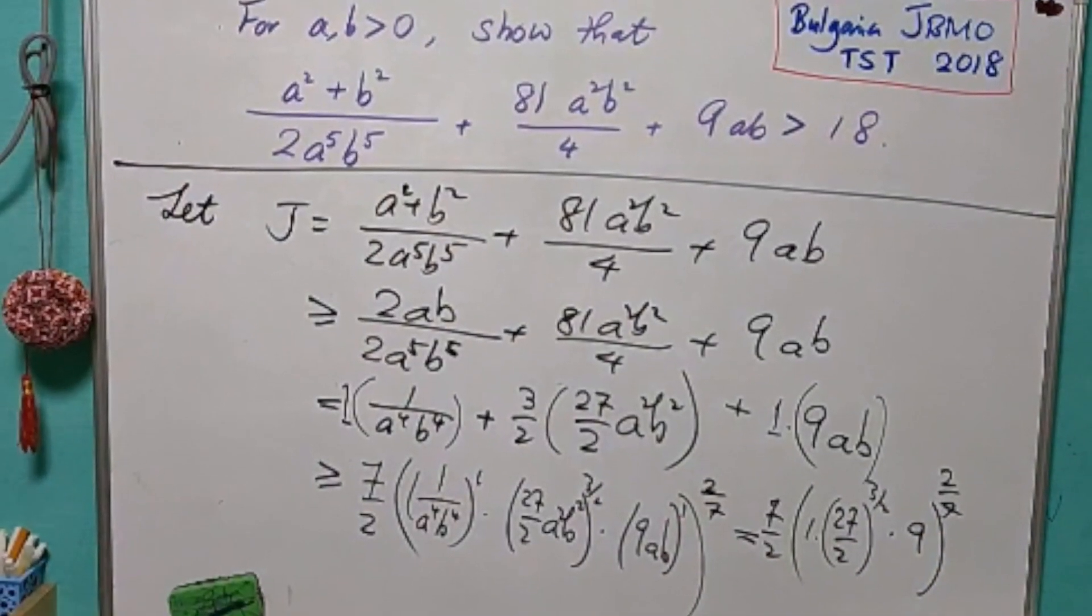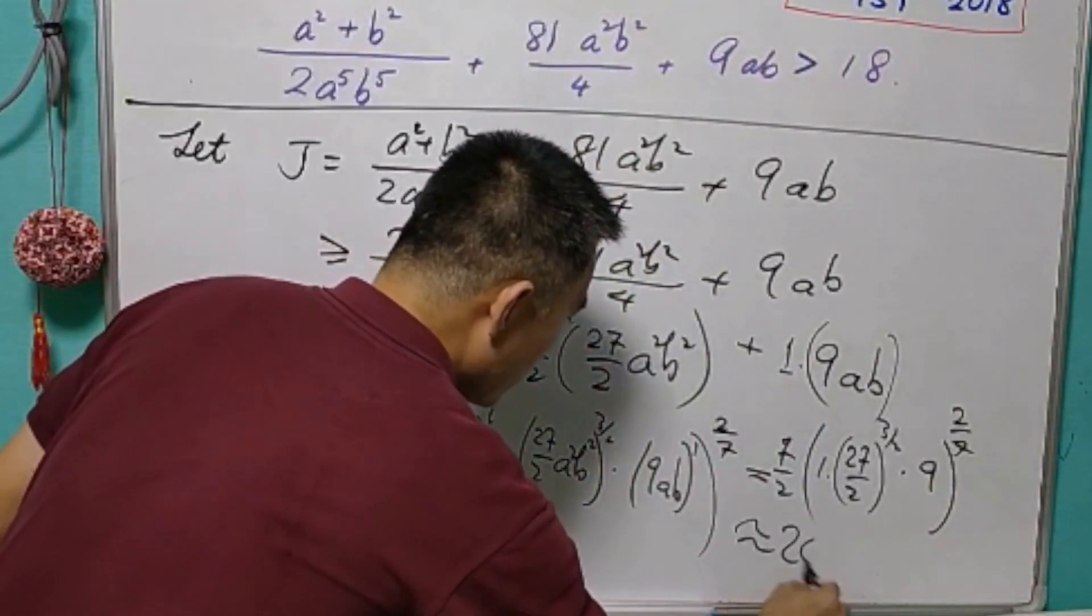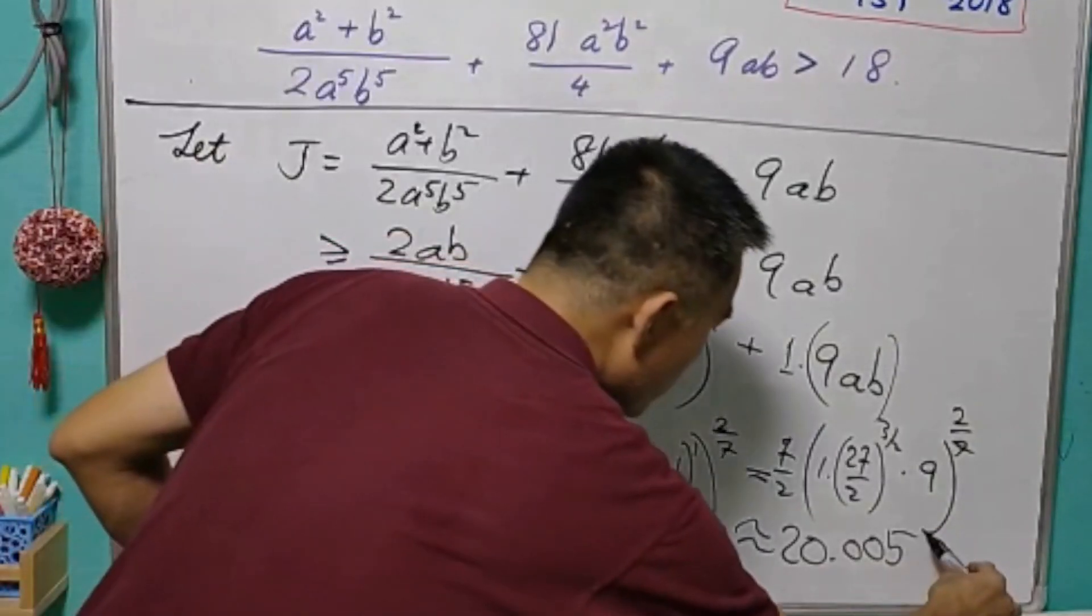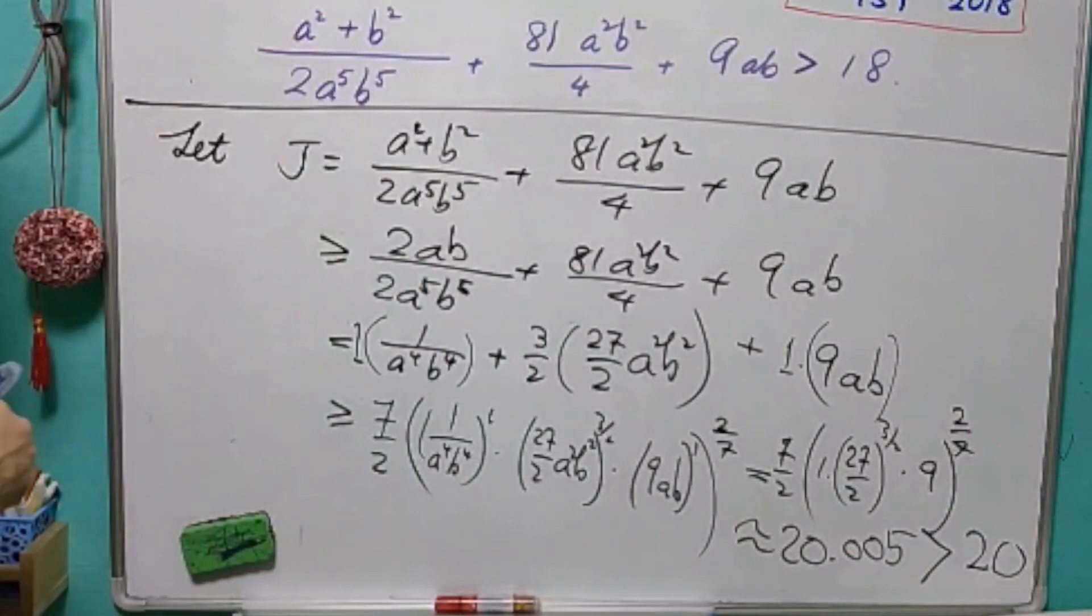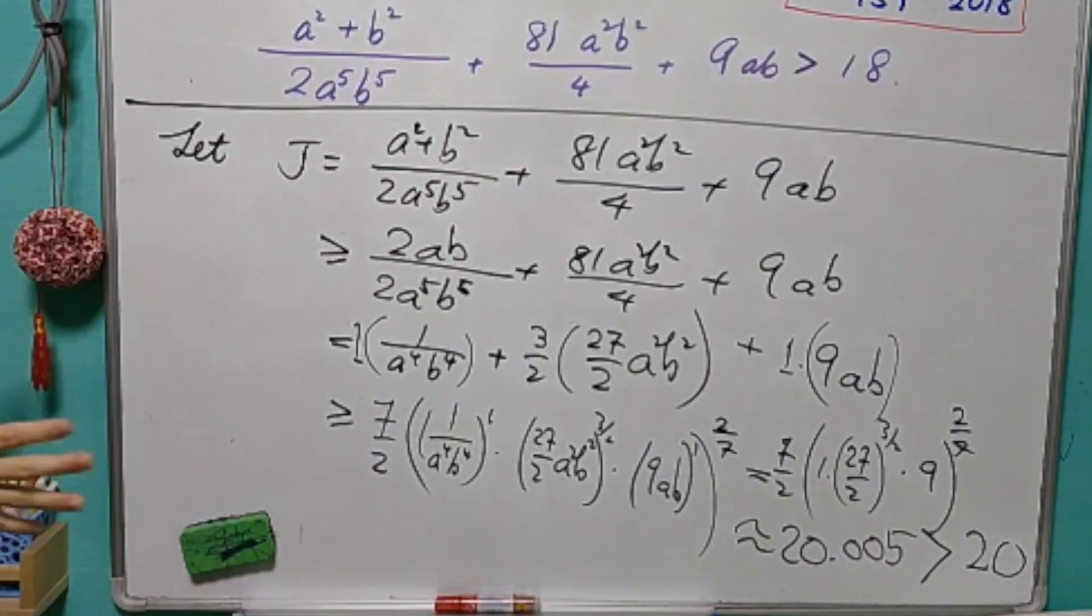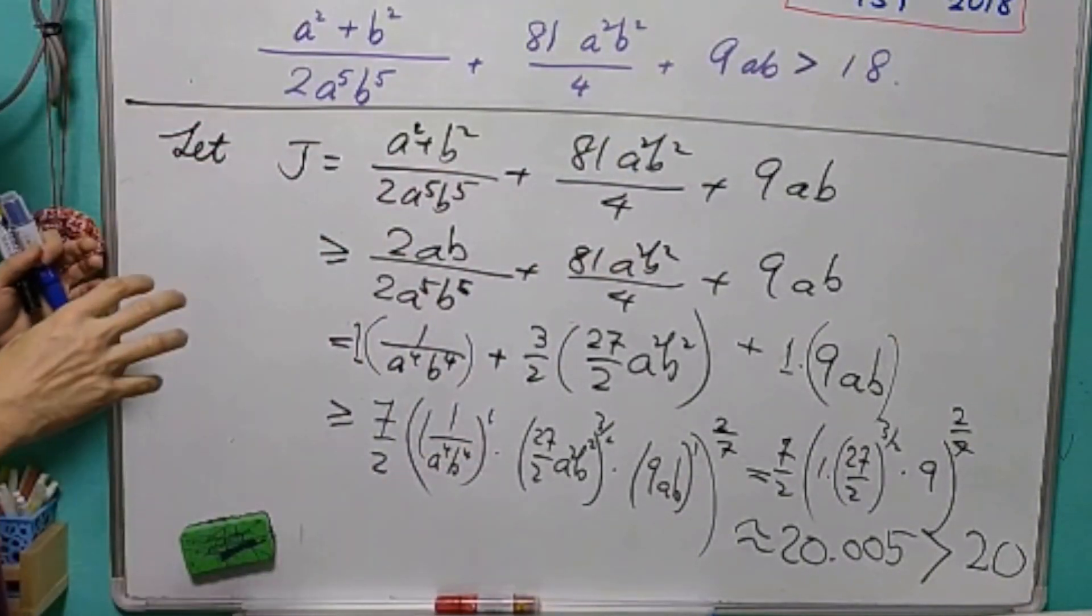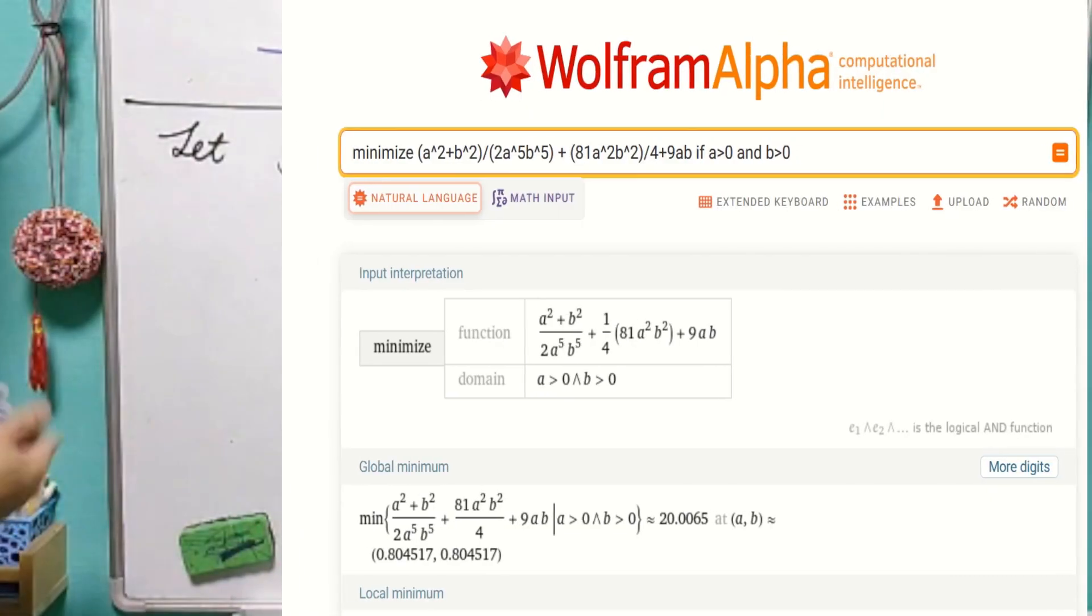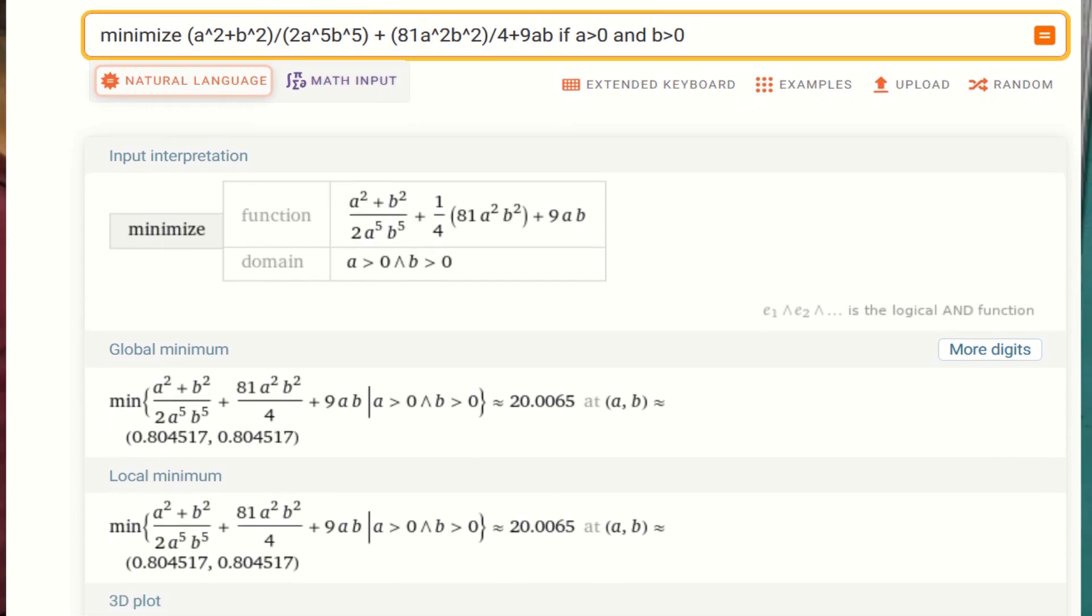Now, of course, we need to use a calculator to get what is this number. It is about 20.005. 20.005 of course is greater than 20. So, with this, we have proved that J is greater than 20. Which is a significantly better bound compared to the original question. You can also get the exact minimum value using Wolfram Alpha. And you will see that the actual minimum value for J is about 20.006.